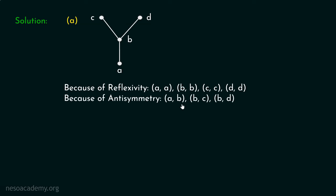Because of anti-symmetry, (A,B), (B,C), and (B,D) must be in the partial order. There is an edge from A to B, and the relationship is always defined from bottom to top. So (A,B), (B,C), and (B,D) belong to the partial order. It is important to note that (A,B) belongs but (B,A) does not. Similarly, (C,B) and (D,B) do not belong to the partial order.